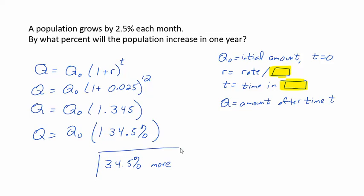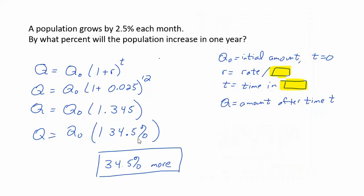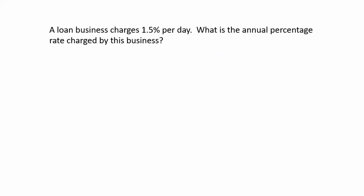So it's gonna raise by 34.5%. So where students make a mistake here is they think, well, if it's raising 2.5% each month, I'll just times that by 12, and it's gonna raise 30%. And that's ignoring the compounding that's happening. It's gonna raise by more than 30%. It's gonna raise by 34.5%. And you don't even have to know what Q0 is. This tells you what's happening. Why don't you try another one like this.